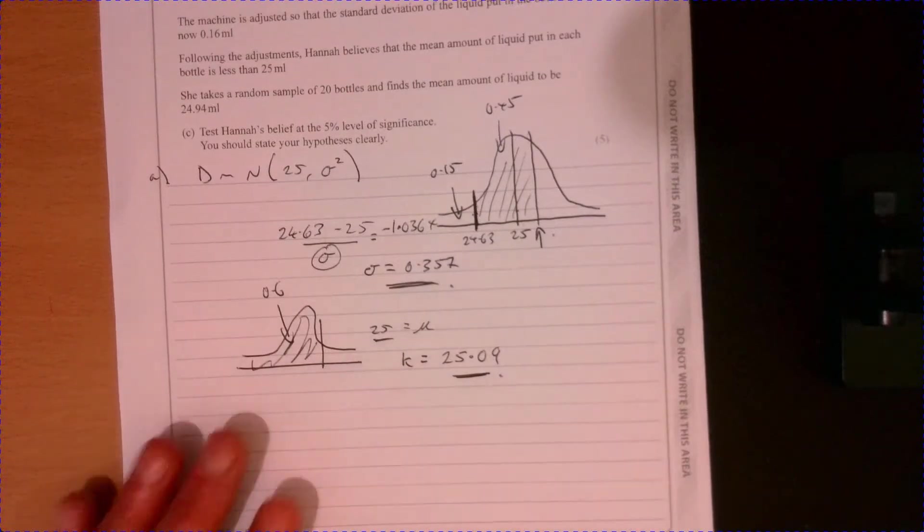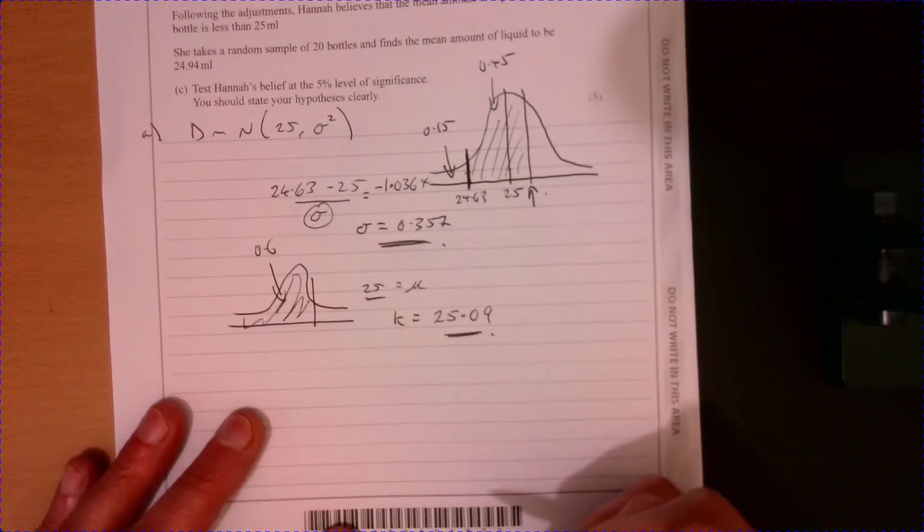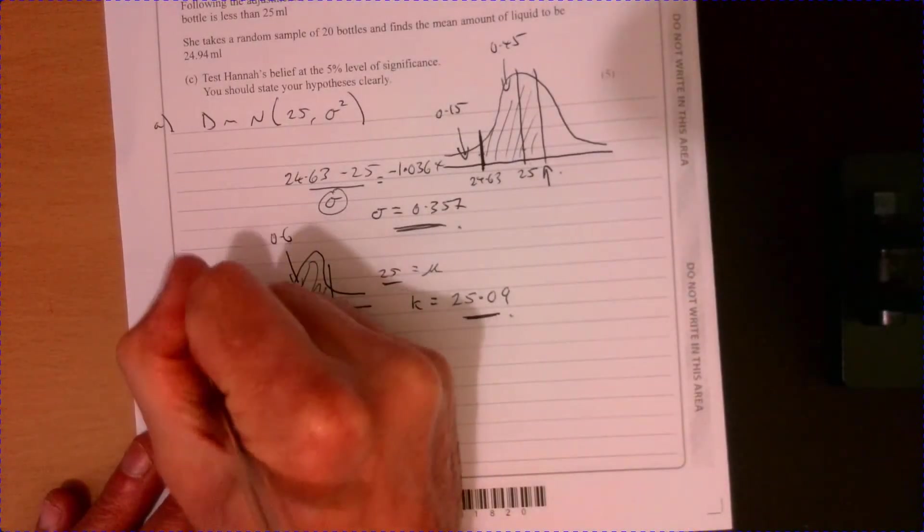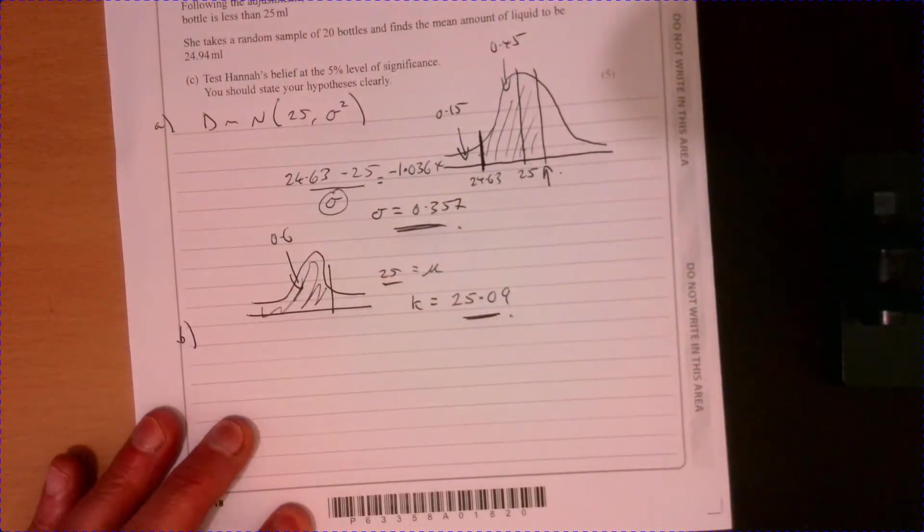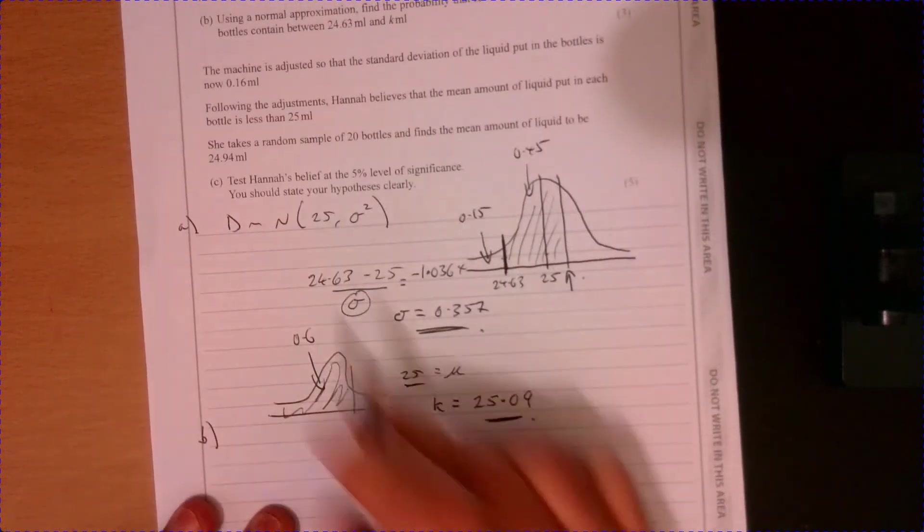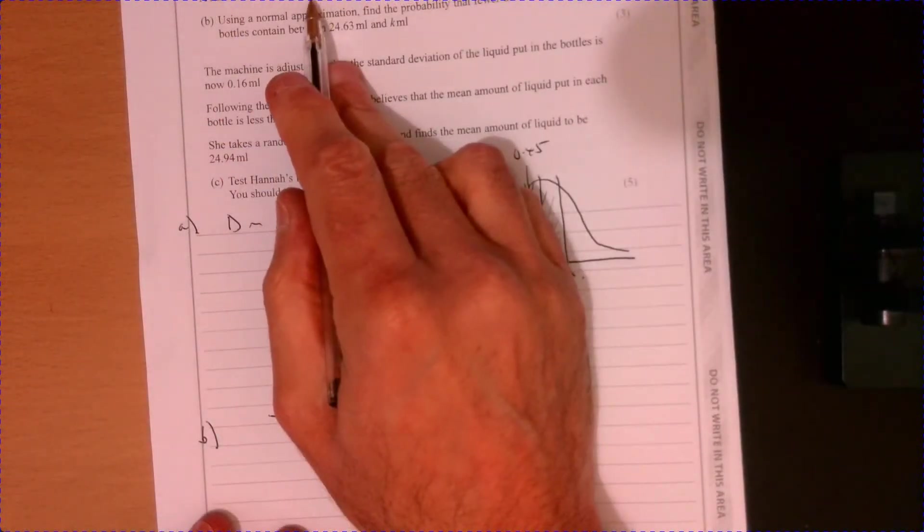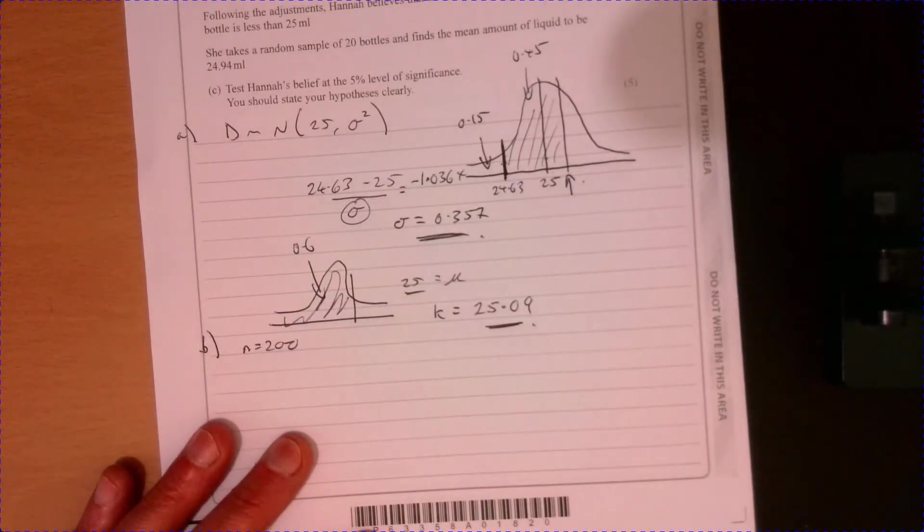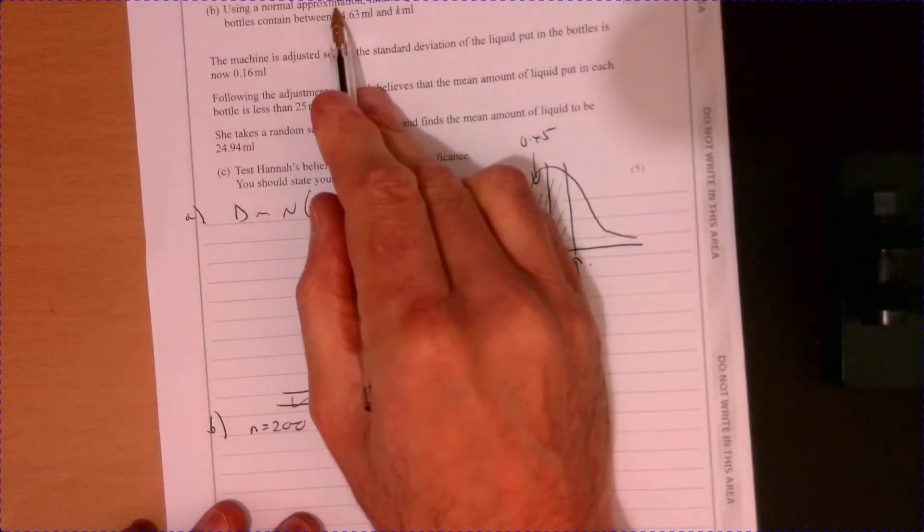So you've just got to plug that information in. So we've worked out what K is. So now let's have a look at part B. So let's have a little think about what we've been just told on part B. So a random sample of 200 bottles is taken. So let's just scan, just noting down what we've got here. It says a normal approximation.